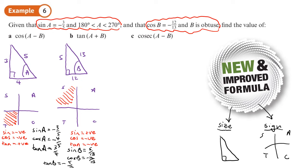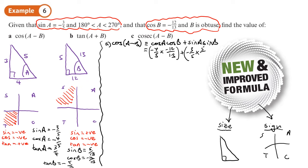We've now got everything we need to answer this question. Part A says, work out cos A minus B. The expansion for that is cos A cos B plus sine A sine B. Cos A is negative 4/5, cos B is negative 12 over 13, sine A is negative 3/5, sine B is 5 over 13. That will give us 48 over 65 minus 15 over 65, leaving us with 33 over 65.